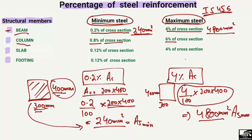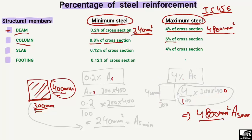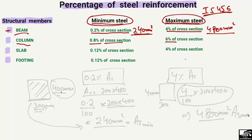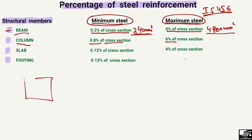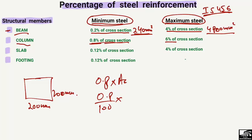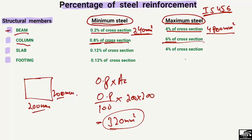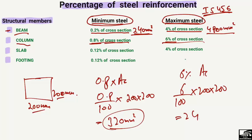For a column, the minimum reinforcement requirement is 0.8% of the cross-section and the maximum is 6%. For example, with a column cross-section of 200 mm × 200 mm: minimum = (0.8 / 100) × 200 × 200 = 320 mm²; maximum = (6 / 100) × 200 × 200 = 2400 mm².